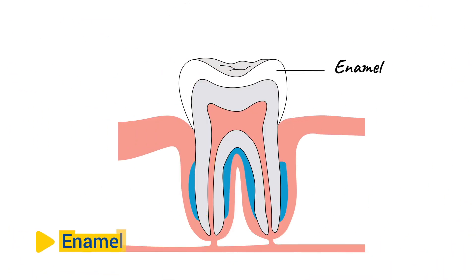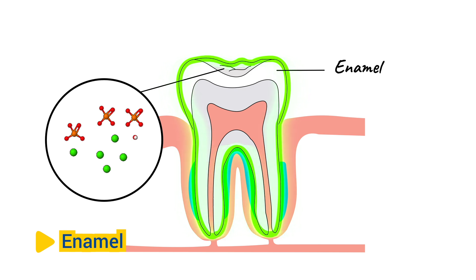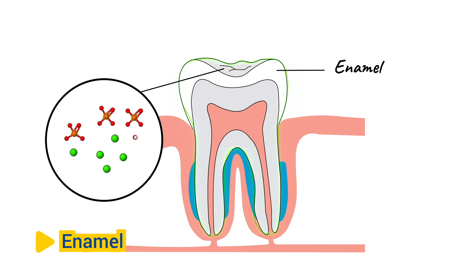Enamel. The enamel is the outermost layer of the tooth and is the hardest substance in the human body. It is primarily made up of minerals, particularly hydroxyapatite, which provides strength and protection to the tooth. Enamel is highly resistant to decay and serves as a barrier against acids and bacteria that can cause tooth decay.